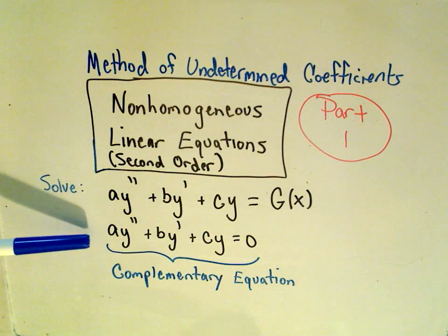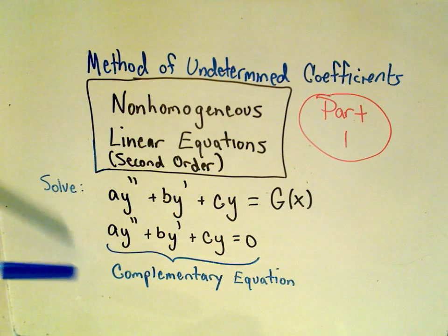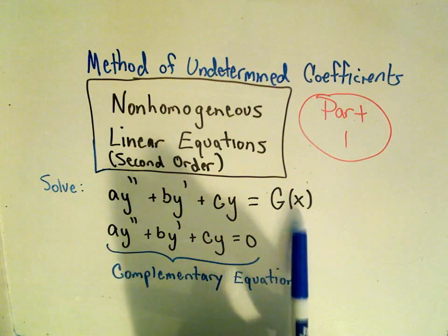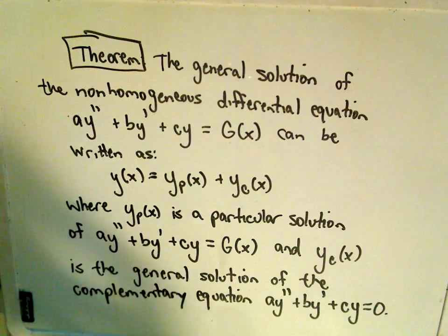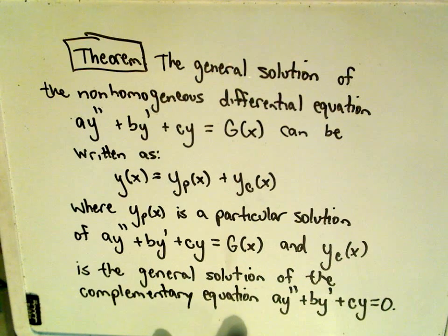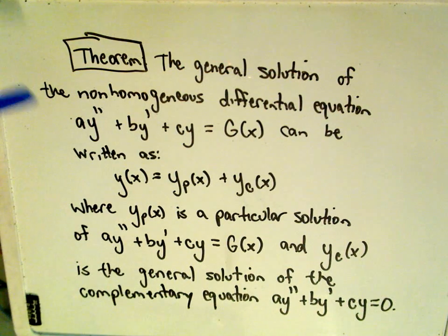To do this, we're first going to solve what's called the complementary equation. And basically we just replace our function g of x with a 0 and solve that first. So this is going to be part one, because I think it can be a little bit of a long process.